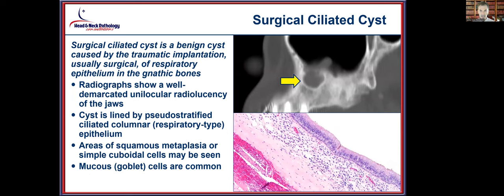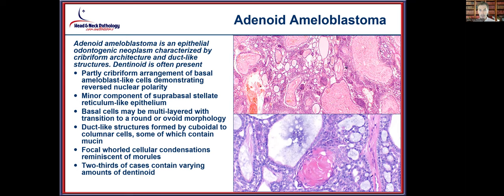Surgical ciliated cyst is essentially an implantation phenomenon — following surgery or trauma, there is displacement of respiratory-type epithelium. Radiographically it is well-demarcated, and the cyst is lined by normal respiratory-type epithelium. Goblet cells are quite frequently identified in this lesion.